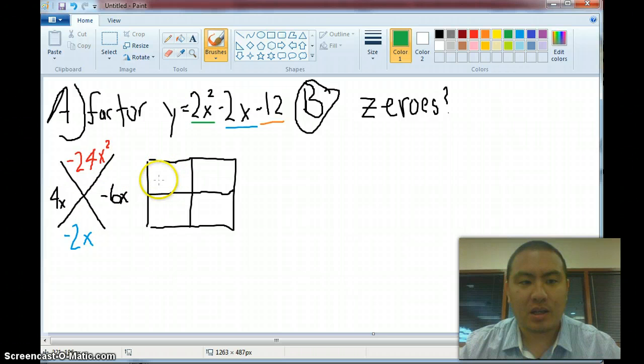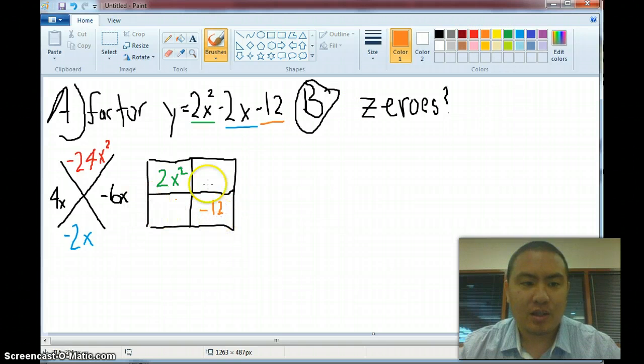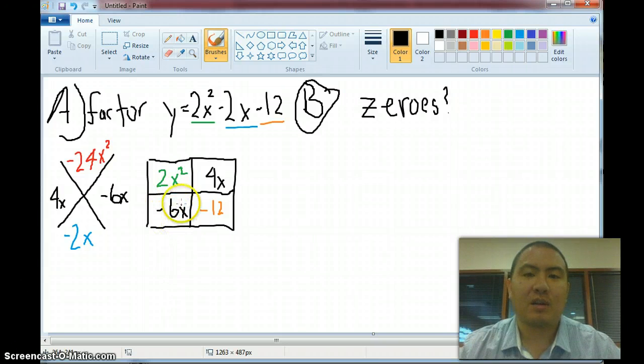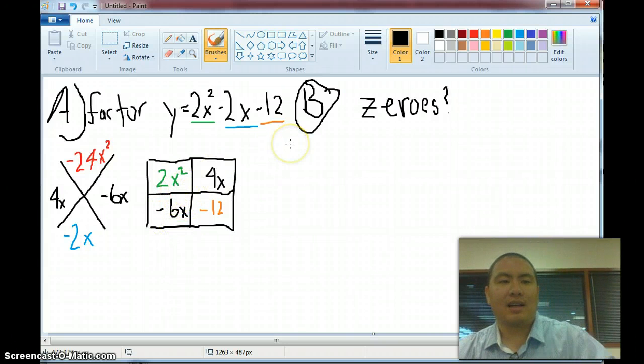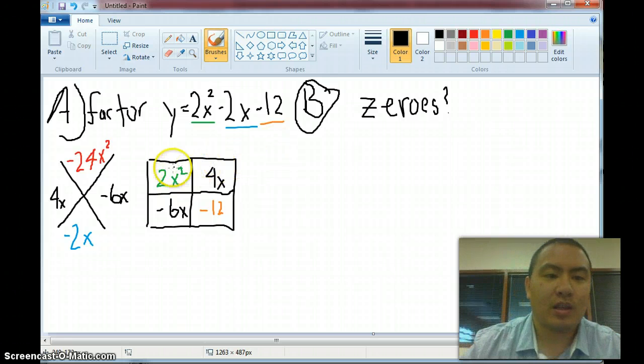So now you just have to move it into the box. You finish the X, now you can go through the box. So you place 2x squared where it should be, and then we place the negative 12 where it should be, right here. And now we know what these two things are. That's going to be 4x and negative 6x. And it doesn't really matter if you put negative 6x on the top right or the bottom left, it'll end up being the same thing.